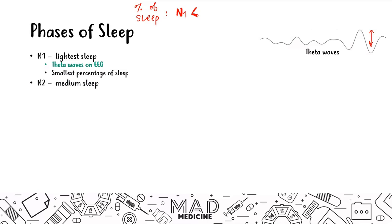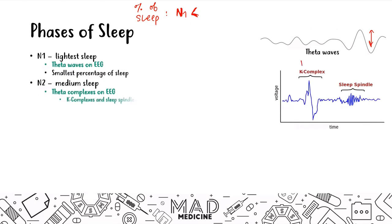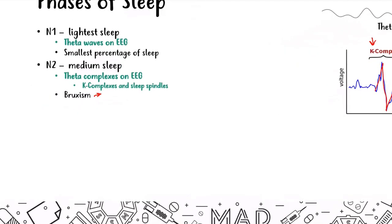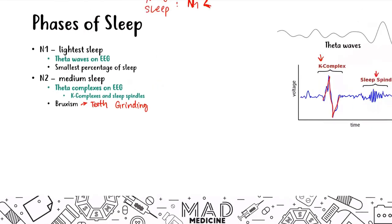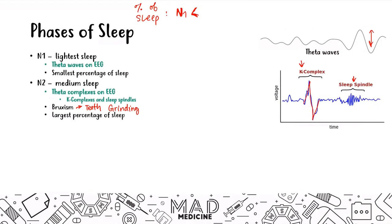After N1, you have N2, which is medium sleep. In N2, you're going to have theta complexes on the EEG. The theta complexes have two main characteristics: the K complex, which is this characteristic increase, decrease, and back increase, kind of like a QRS complex, and these sleep spindles. N2 is also where you're going to grind your teeth, aka bruxism. This is the largest percentage of sleep.